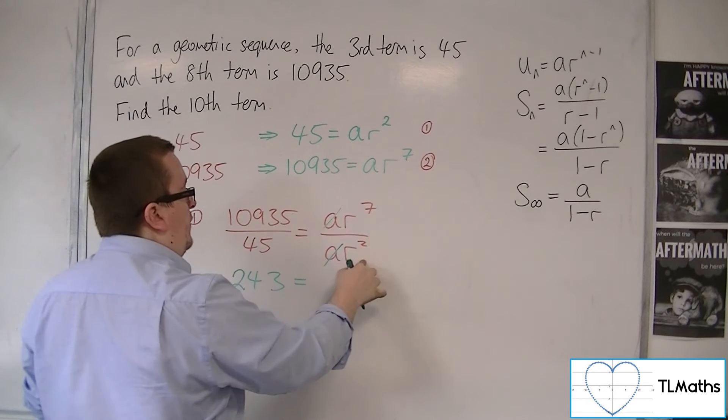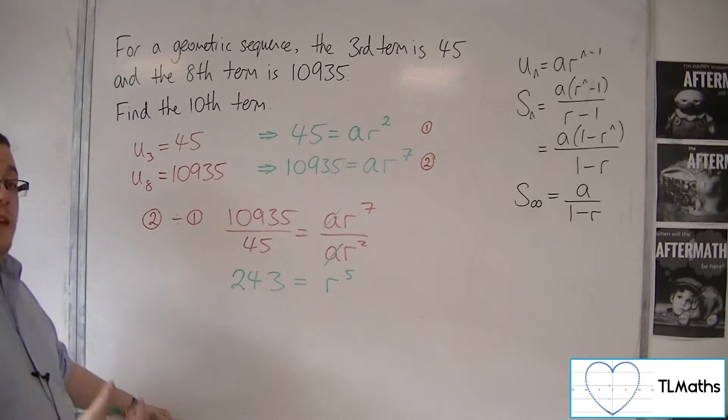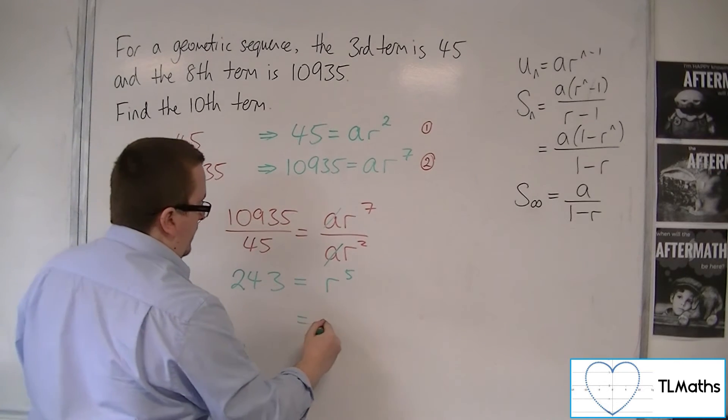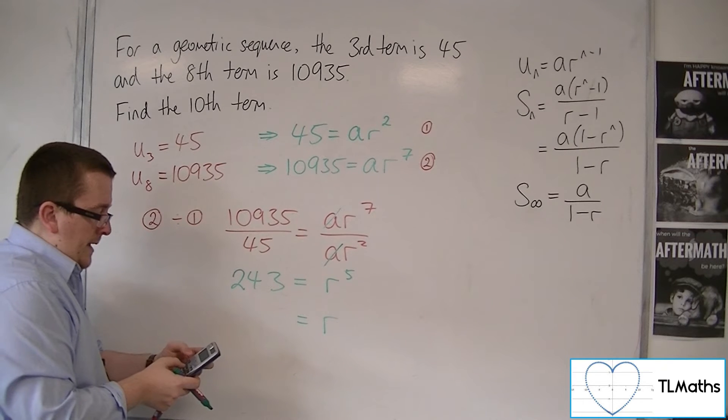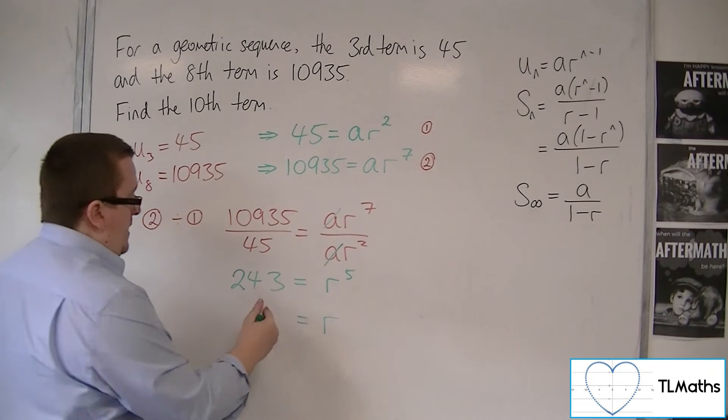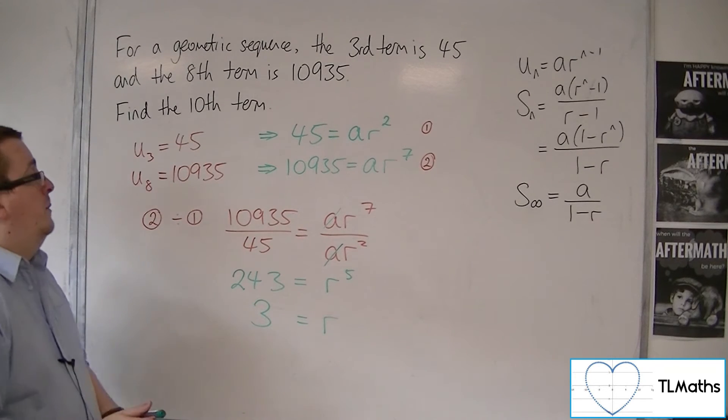So you could say R to the 7 divided by R squared is R to the 5. So you could then fifth root both sides. And the fifth root of 243 is 3. And so that finds R, the common ratio.